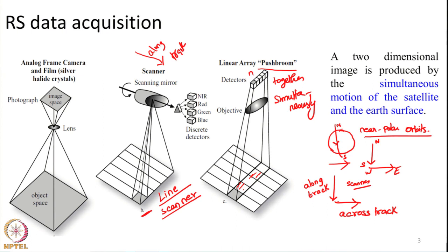Some of the methods are line scanner, whisk broom scanner, push broom scanner, and two-dimensional array type of detectors. We also saw a special case of how data will be collected in hyperspectral sensors and so on.